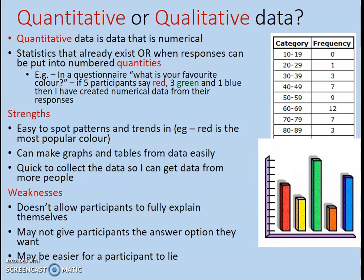You can also cross-reference with other variables — for instance, noticing that red is far more popular among girls than boys. You can easily make graphs and tables from numerical quantitative data. It's also quick to collect, so you can reach more people. Sending out questionnaires means you can get responses from a large number of participants, and because the data is quick to analyse, you're able to ask far more people, making your study much more representative.